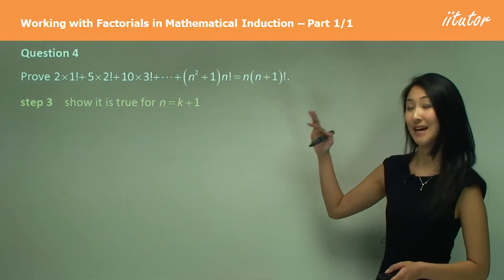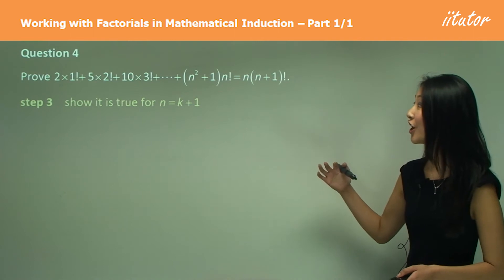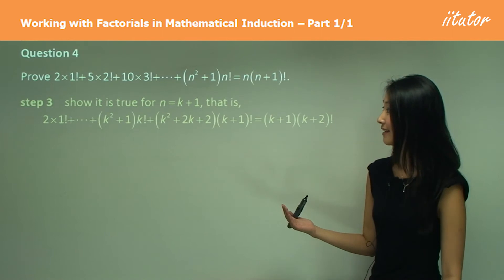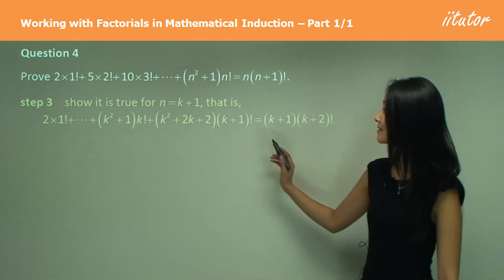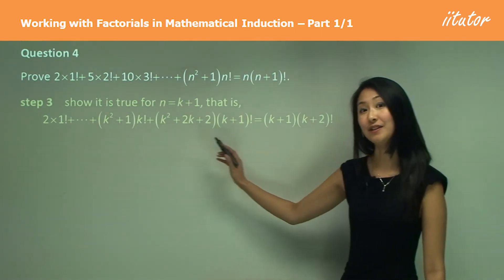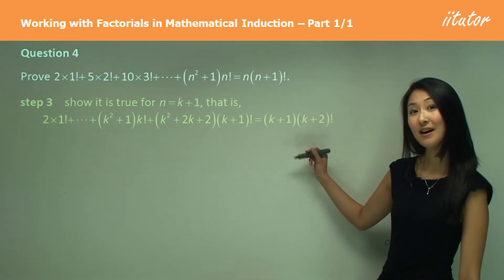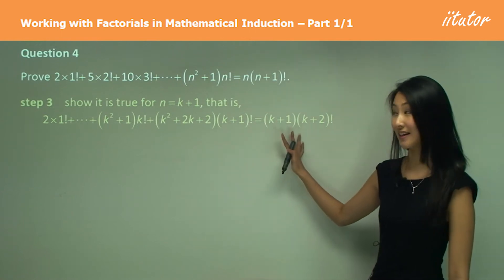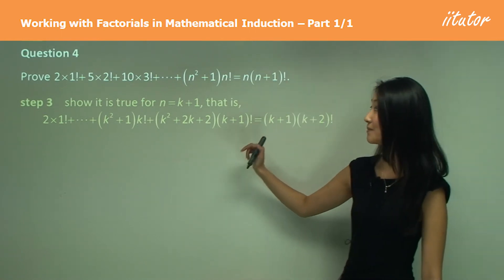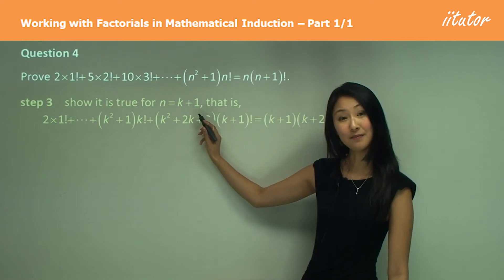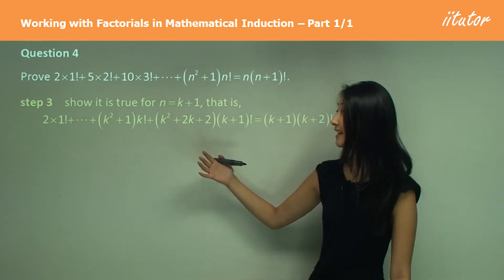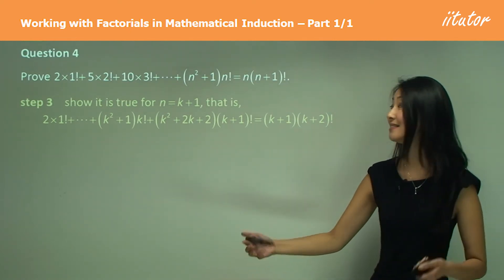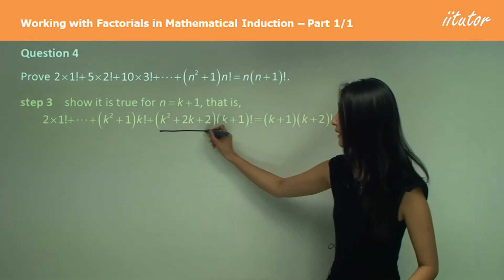Now we move on to step 3. We want to show that this is true for N equals K+1 — that is, the left hand side equals the right hand side for K+1. We need to prove that. For the left hand side, what we always do is add in an extra value at the end, and this is the extra value we're adding in.